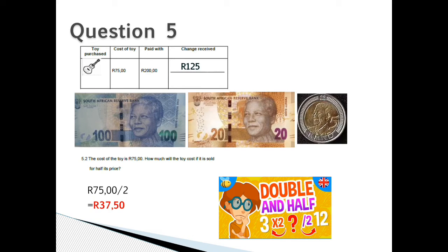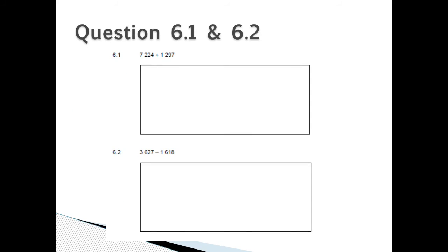Question 5: The change received would be 125 Rand. 5.2: 75 Rand divided by 2 will give us 37 Rand 50, and that is half price.